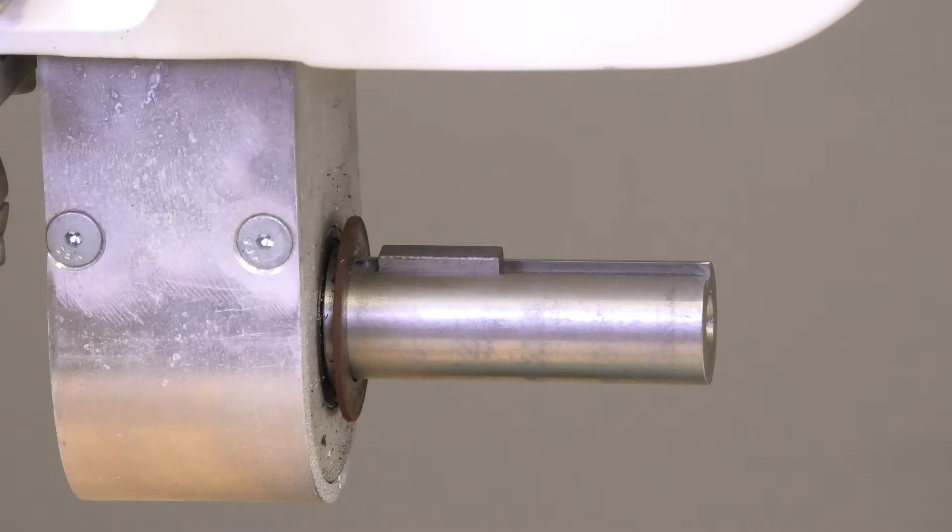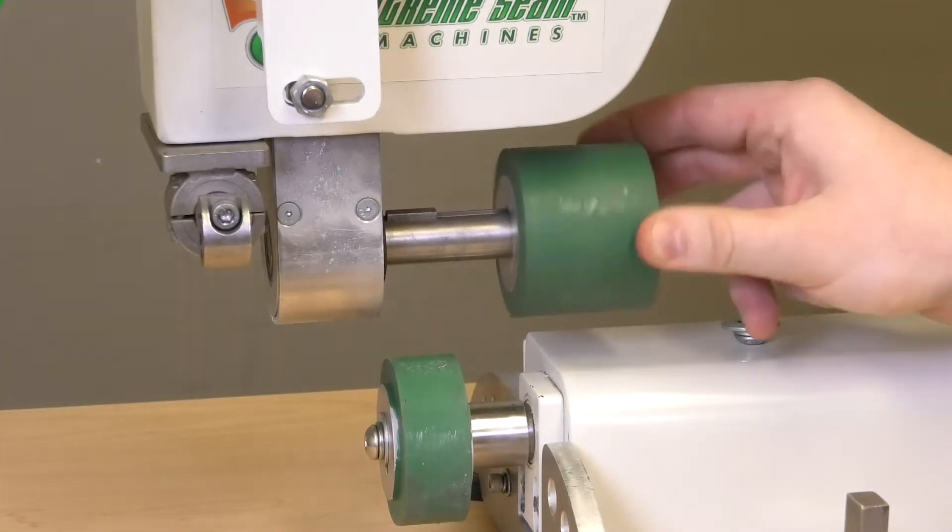After sliding that wheel, make sure the keyway is in the key and add your two inch roller.